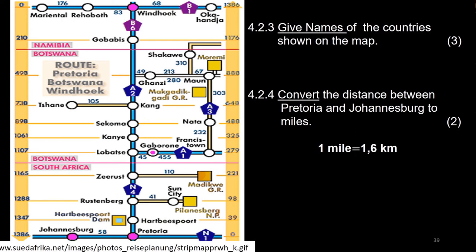The map shown is called a strip map or strip chart — know your map types including national maps and profile maps. They ask: mention the national roads they will drive on in South Africa. National routes are marked with N: the answer is N4 and N1, giving two marks. They also ask for the names of countries shown on the map: Namibia, Botswana, and South Africa — three marks for listing them. The next question asks to convert the distance between Pretoria and Johannesburg, which is 58 km, to miles.